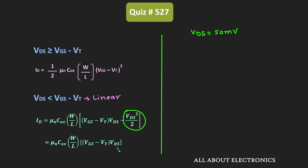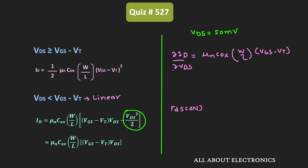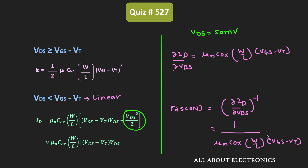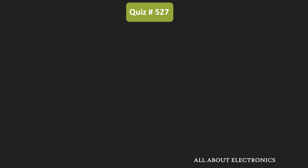Now we differentiate this drain current ID with respect to VDS. So ∂ID/∂VDS = μn × Cox × (W/L) × (VGS − VT). The on-resistance of the MOSFET in the linear region, RDS(on), is the inverse of this term: RDS(on) = 1 / [μn × Cox × (W/L) × (VGS − VT)]. This is the expression for RDS(on), showing the MOSFET used as a resistor.